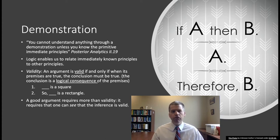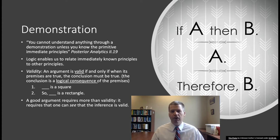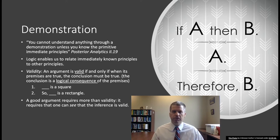Let's introduce some terminology. The first term is validity — this applies to arguments. An argument is valid if and only if, when its premises are true, the conclusion must be true. A very simple example is modus ponens: if A then B, A, therefore B. We ask: is there any way for the premises to be true and the conclusion to be false? The premises say if A is true then B is true, and A is true, so it follows as a logical consequence that B itself is true.